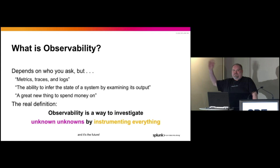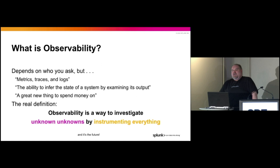Really what we talk about when we're talking about observability is a way to investigate things that are unknown unknowns — things that you didn't know could break. And when they do break, you don't know that they're broken necessarily. The way that you do this is by instrumenting everything, literally everything. The goal is to collect as much data as you possibly can and then use some sort of observability system to tell you what you need to pay attention to or how things are related.